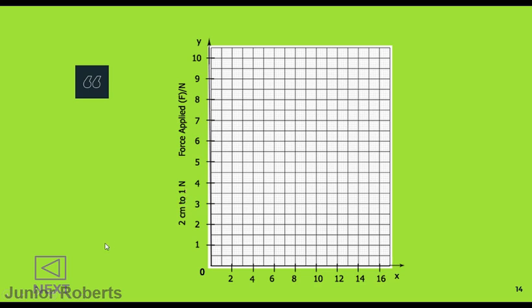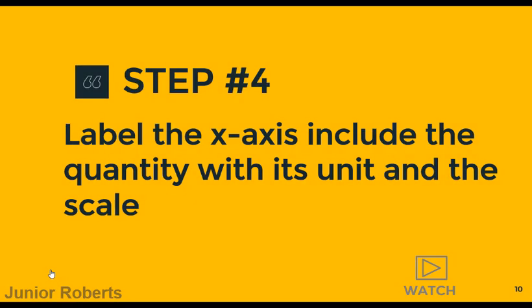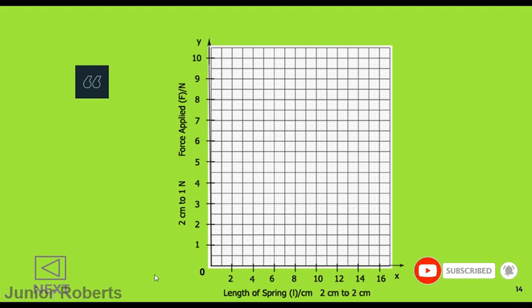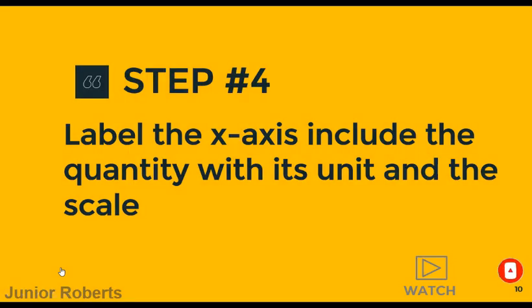Step four requires us to label the x-axis including the quantity with its unit and the scale — the same as we did for the y-axis. On the x-axis the quantity is the length of the spring, the symbol is L, the unit is the centimeter, and the scale is two centimeters to two centimeters.